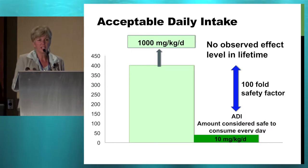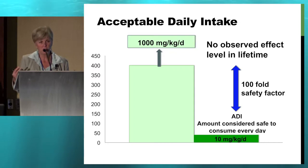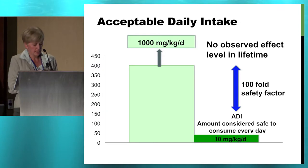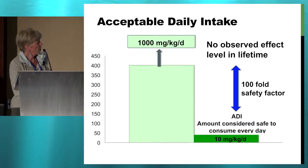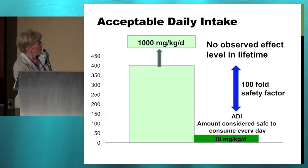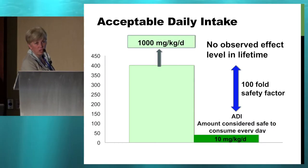So what we have is the no observed effect level from the most appropriate animal model based on toxicokinetics from the longest study available — normally a lifetime study. Then you divide it by the safety factors to get the acceptable daily intake. For example, if the no observed effect level is 1,000 milligrams per kilogram body weight per day, your acceptable daily intake would be set at 10 milligrams per kilogram body weight per day — a safety cushion built in, with actual adverse effects occurring somewhere much higher.